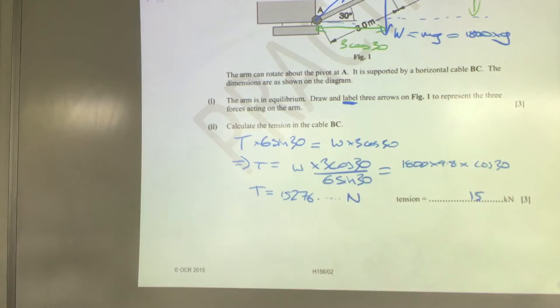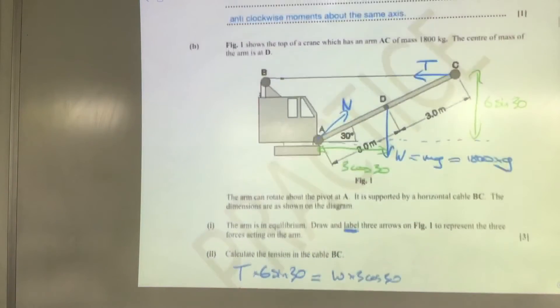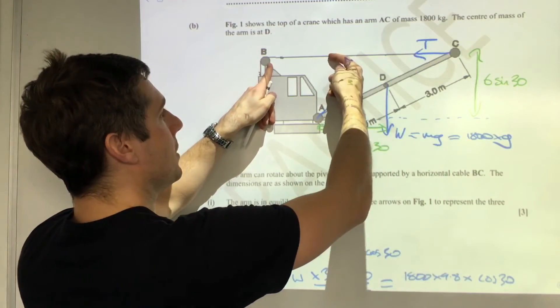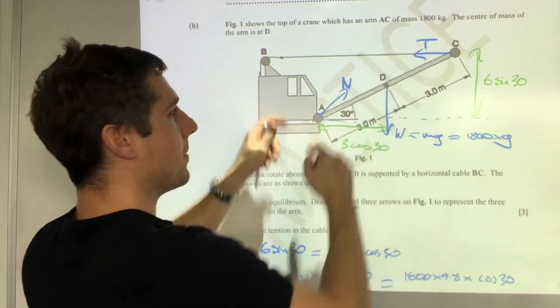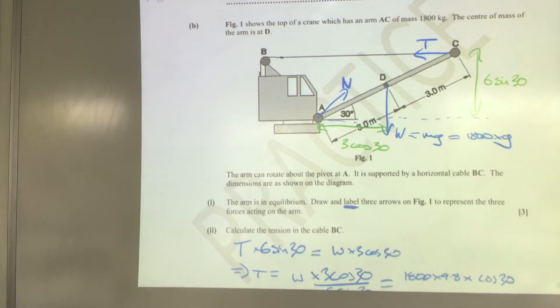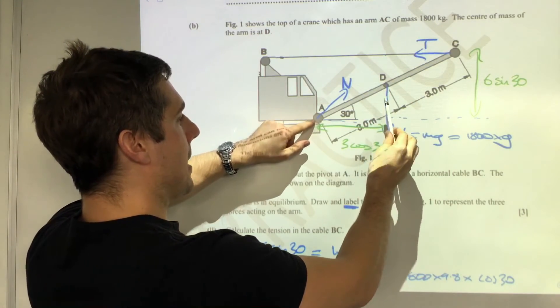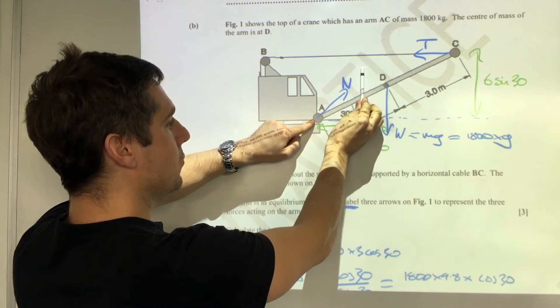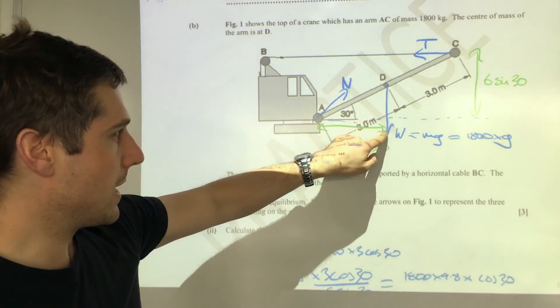That's question one B. Now on to C. The arm is rotated about A by shortening cable BC. That makes the cable no longer horizontal. Explain whether the tension in the cable has increased or decreased. As this rotates, a couple of things are going to happen. The weight is going to start acting towards a point that's closer to A, meaning that the moment produced by the weight will decrease.